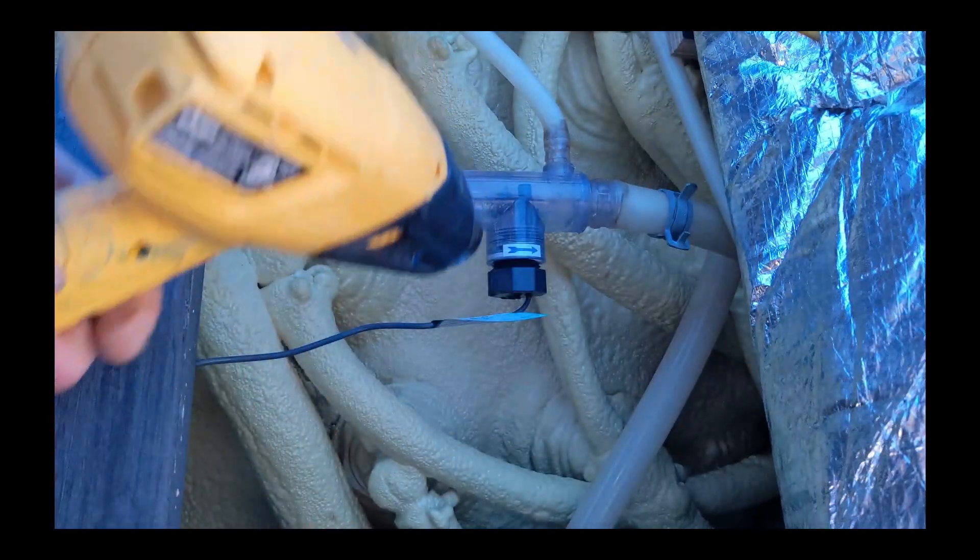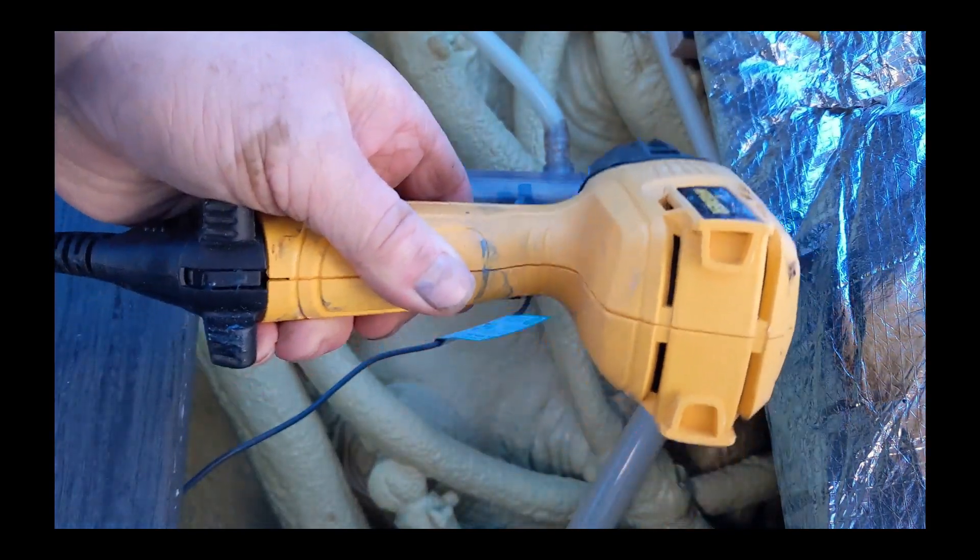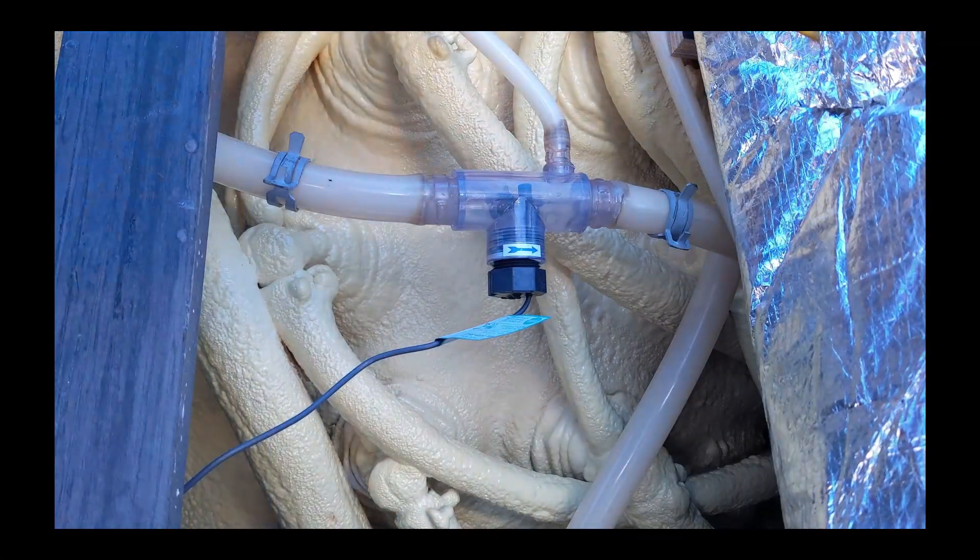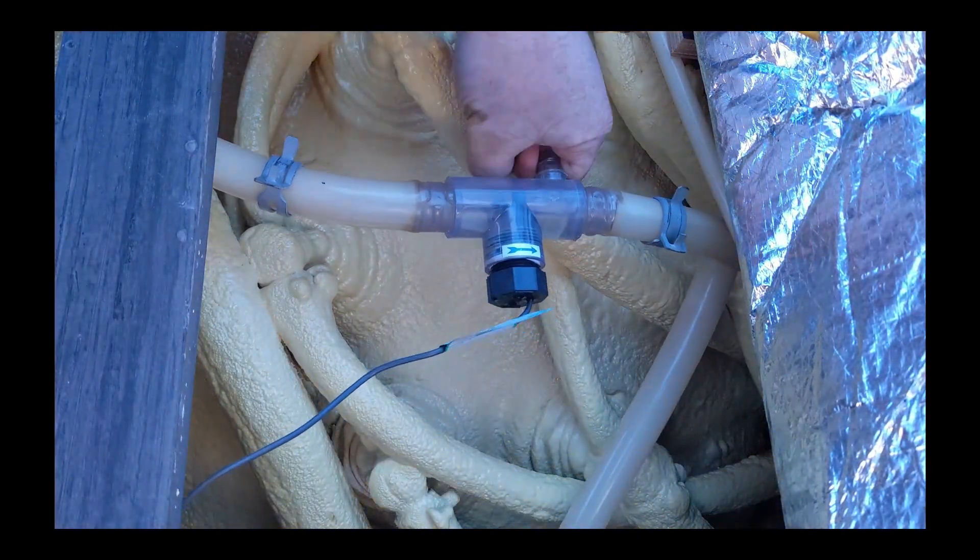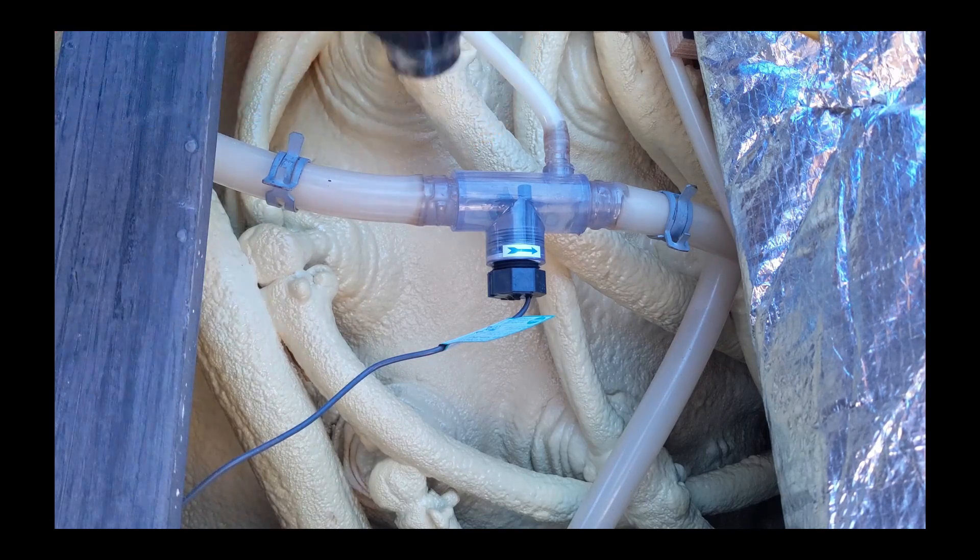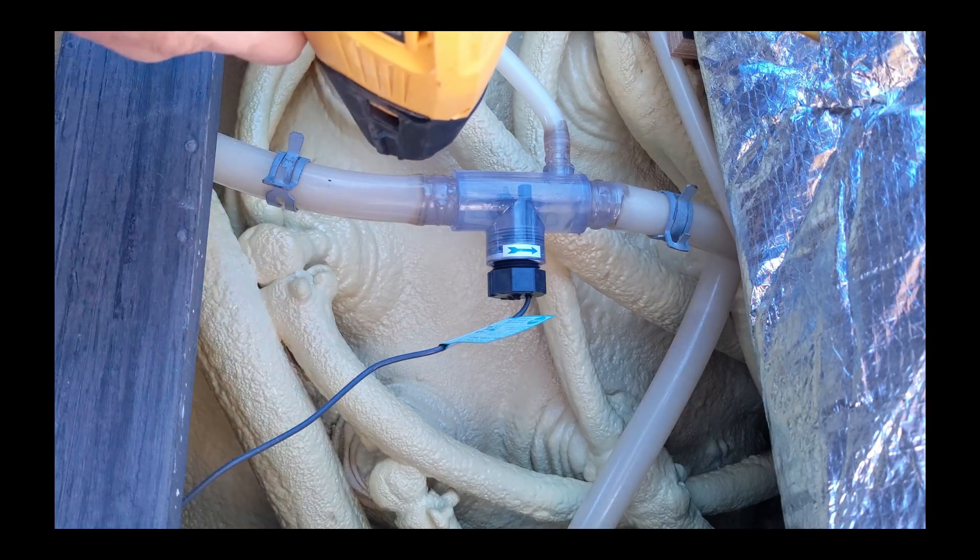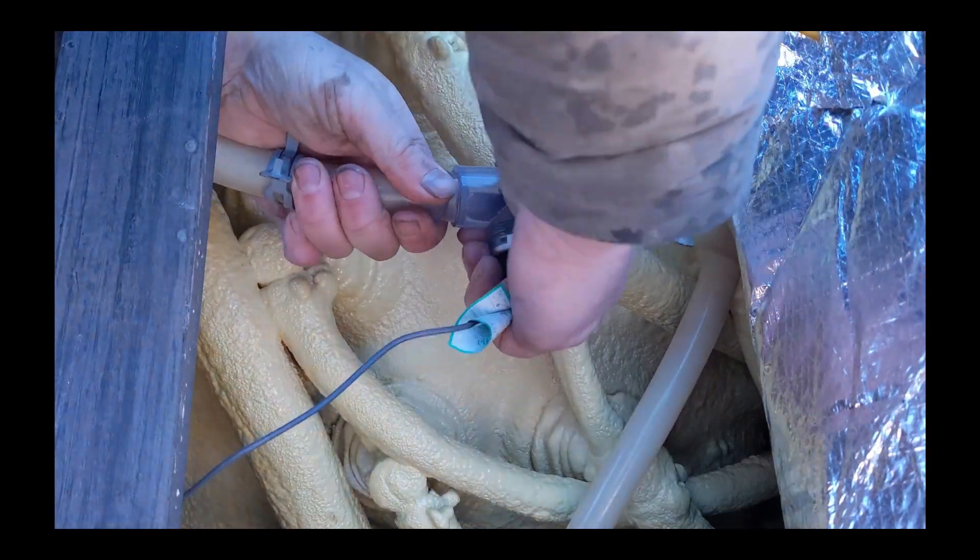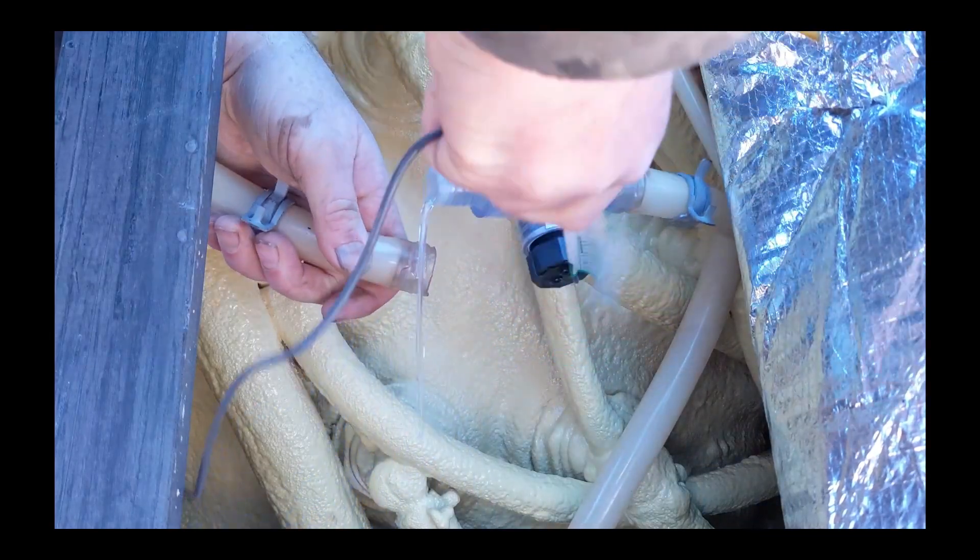Just using the heat gun to soften up the pipe a bit. It's a little easier when you take it off. It's really cold out, so I have to heat up everything so it's a little softer.